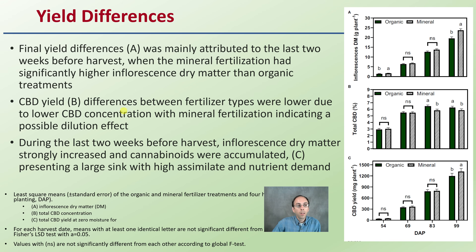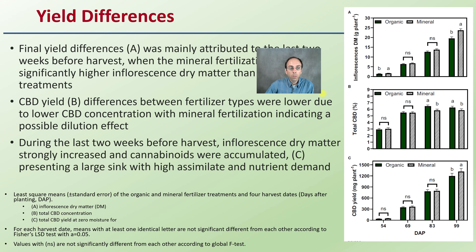Looking at yield differences: final yield differences were mainly attributed to the last two weeks before harvest, when mineral fertilization had significantly higher inflorescence dry matter than organic treatments. CBD yield differences between fertilizer types were lower due to lower CBD concentration with mineral fertilization, indicating a possible dilution effect. During the last two weeks before harvest, inflorescence dry matter strongly increased and cannabinoids accumulated, presenting a large sink with high nutrient demand.